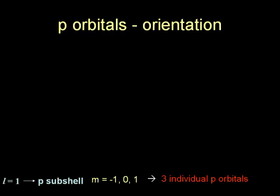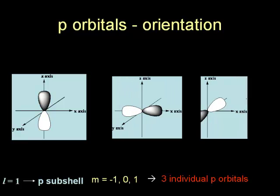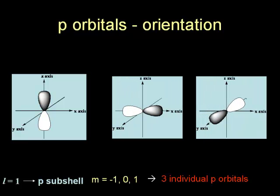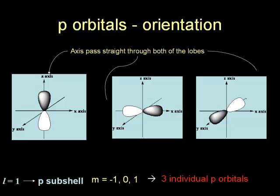Now let us take a look at the orientation of the P orbitals with respect to the X, Y, and Z axes. Remember that there are three P orbitals. Their positions in relation to the axes are shown here. You may notice that with each of these, there is an axis that passes straight through the lobes. For instance, in the one on the left, the Z axis passes straight through both of the lobes.